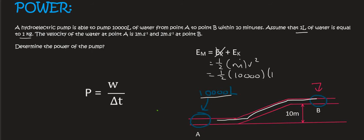So 10,000 liters is going to be the same as 10,000 kilograms. The velocity at that point is 1 meters per second, and so if you work that out, that's going to give us 5,000 joules. Okay, so this water has 5,000 joules down there.